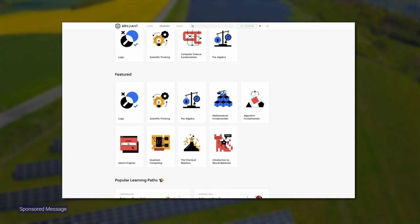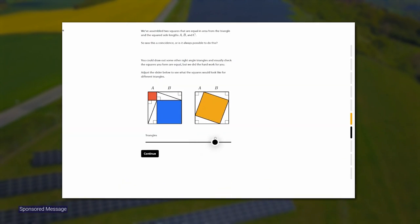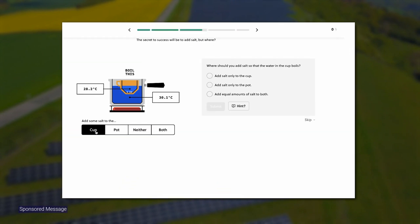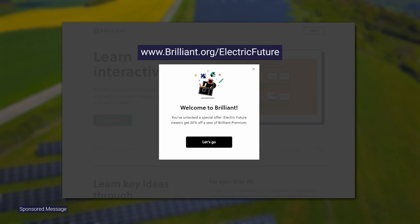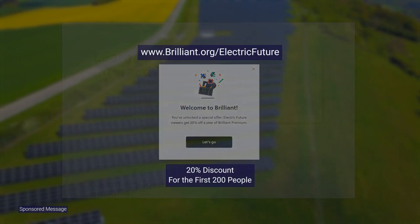Brilliant offers a wide range of other content and topics from mathematical fundamentals to quantitative finance, from scientific thinking to special relativity, from programming with Python to machine learning. Go to brilliant.org/electricfuture and sign up for free. And also, the first 200 people to go to that link will get 20% off the annual premium subscription.